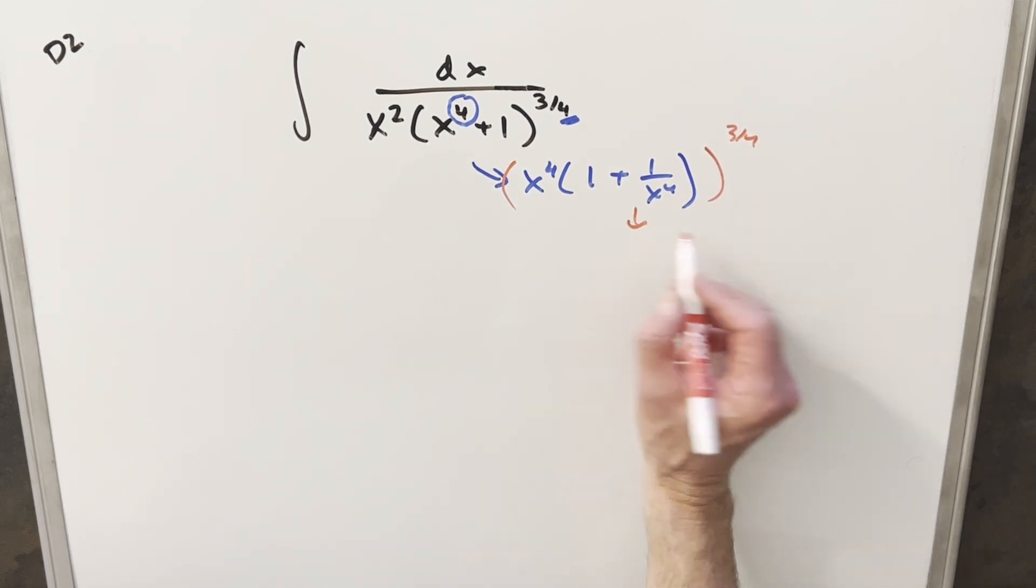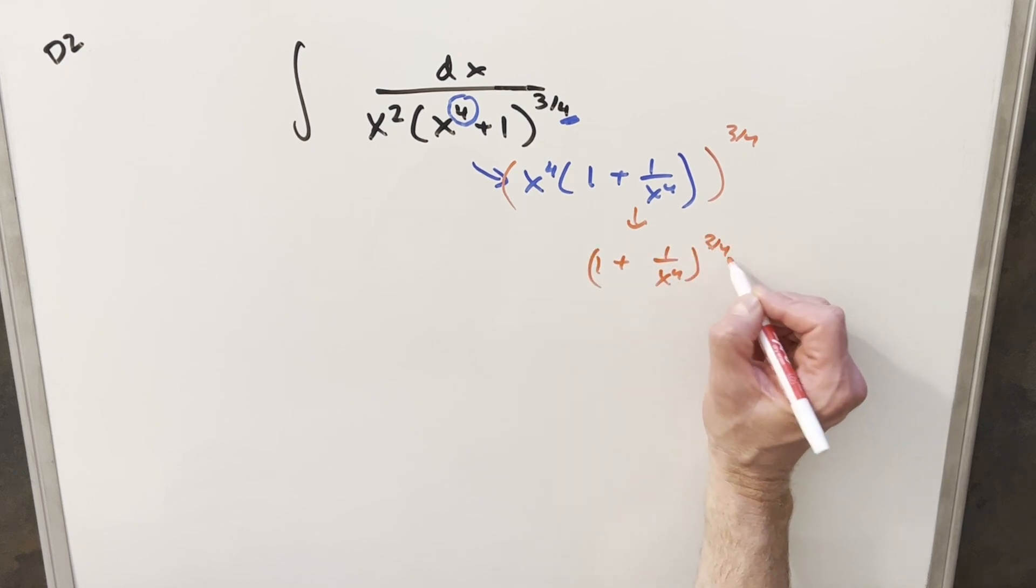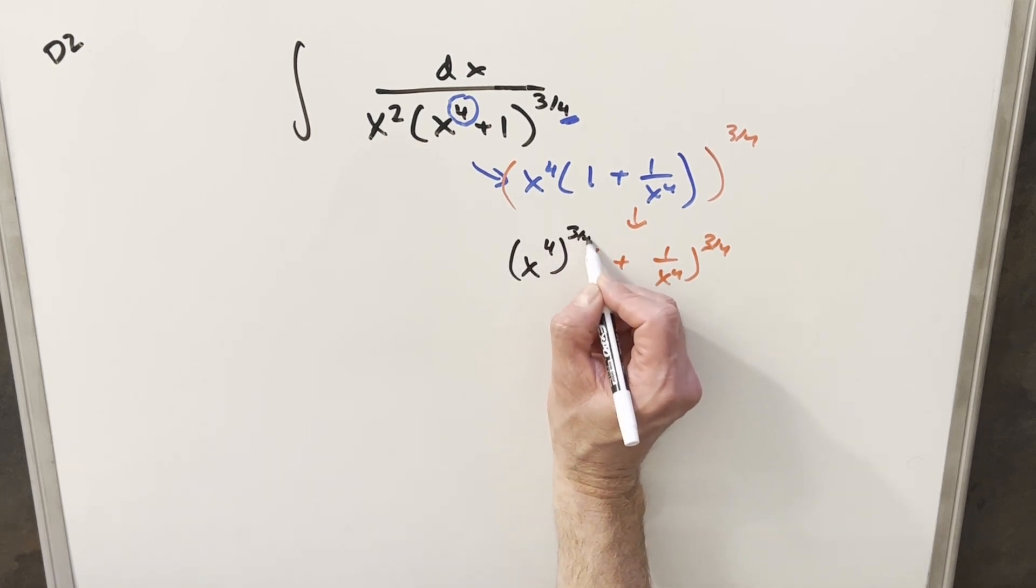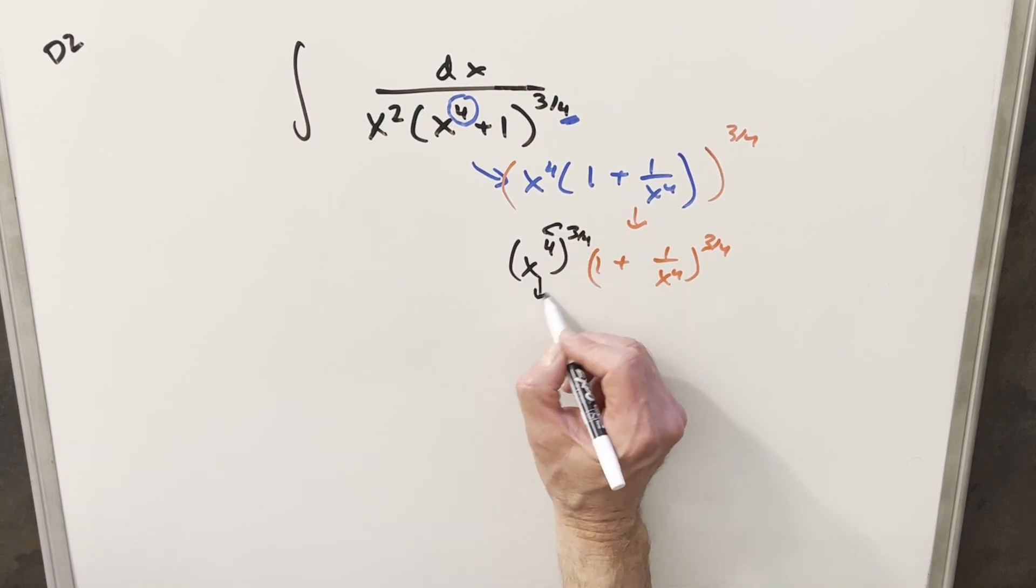So then this second part here would become 1 plus 1 over x to the 4th to the 3 4ths. But then out front here we would have x to the 4th and we'd have this to the 3 4ths. But then by exponent properties, you could multiply this in and this just becomes x cubed.